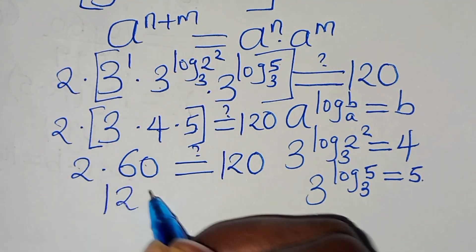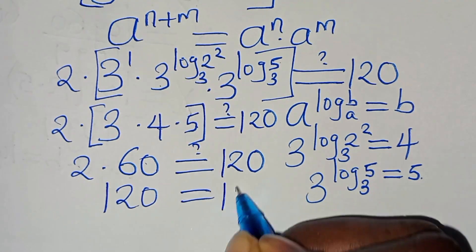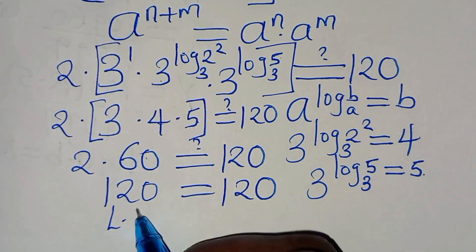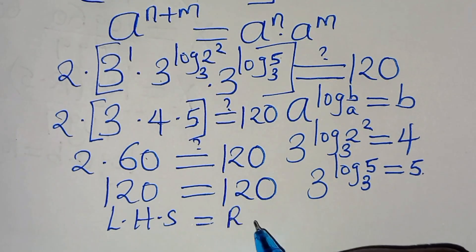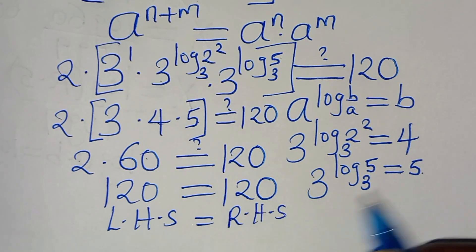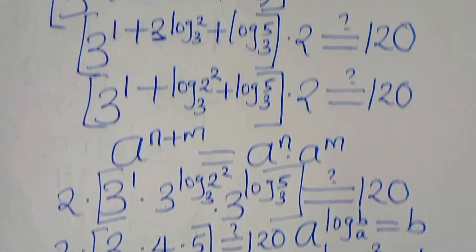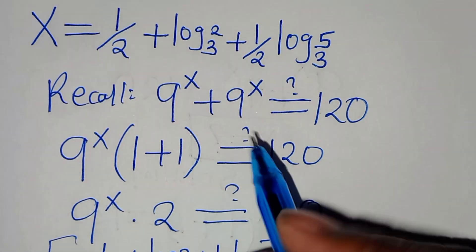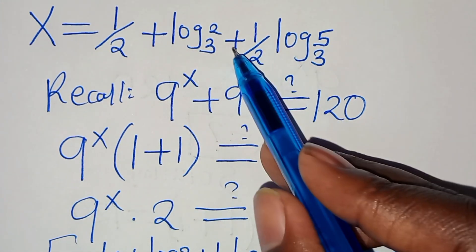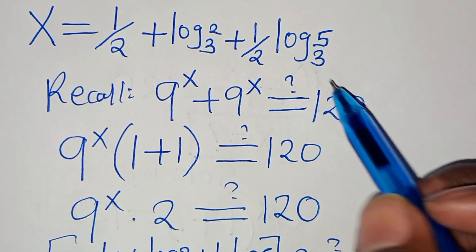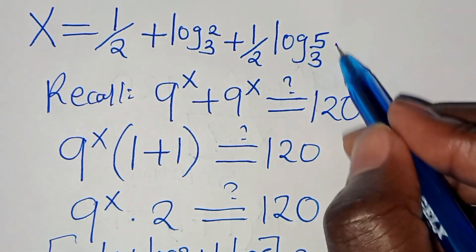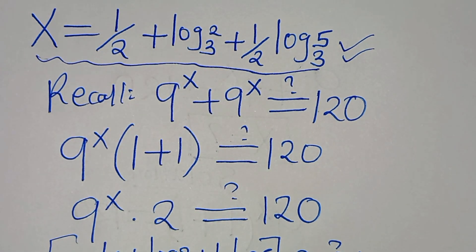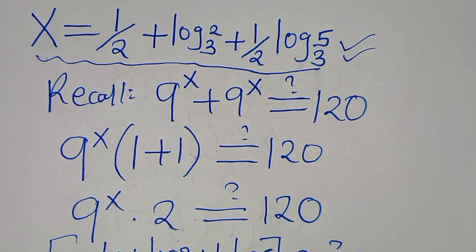So 60 times 2 is 120, which means the left-hand side equals the right-hand side. This affirms that the value of x, which is equal to one half plus log₃(2) plus one half times log₃(5), satisfies the equation. You can review the steps. Like this video and kindly subscribe. See you in the next video.